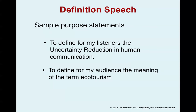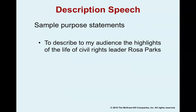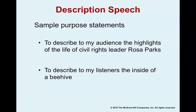Another type of informative speech is a description speech, which involves painting a vivid picture of a person, object, or event. For example, a speaker could give a speech describing a comet — what it looks like, how it streaks across the night sky, and all the facts about what a comet does in space. Sample purpose statements include: 'to describe to my audience the highlights of the life of civil rights leader Rosa Parks,' or 'to describe to my listeners the inside of a beehive.'